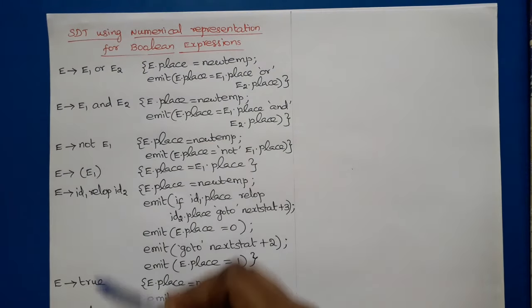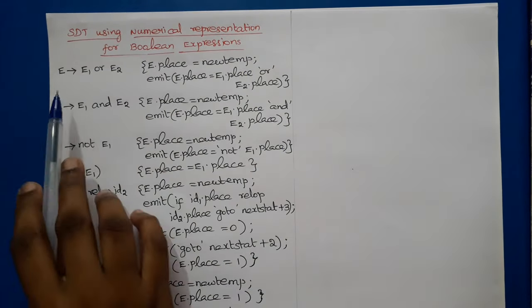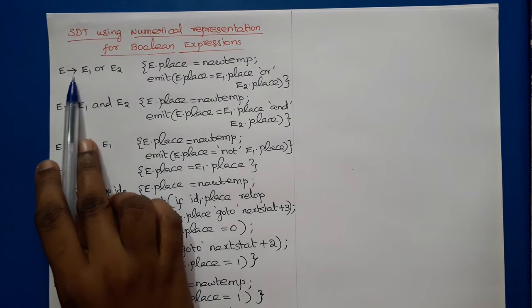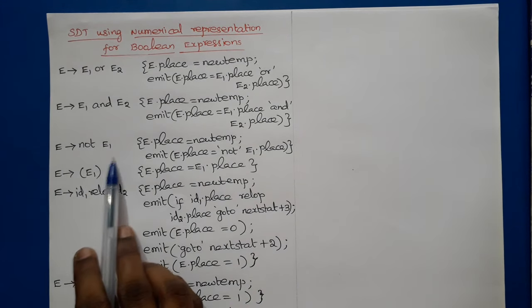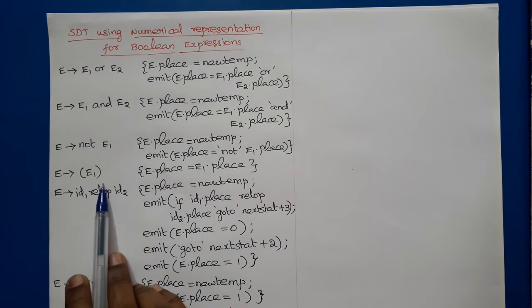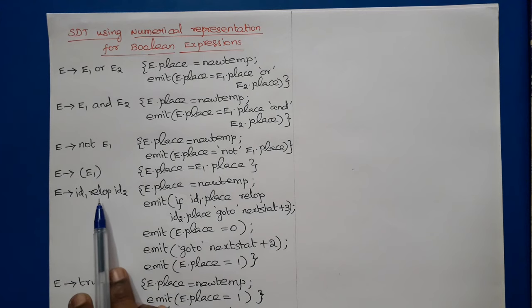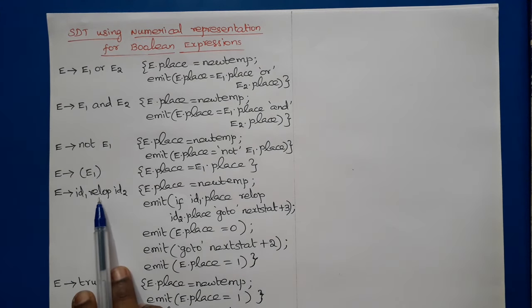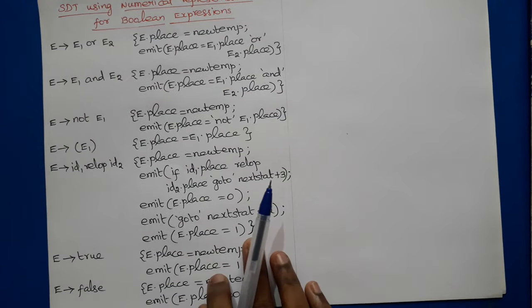This is the grammar for Boolean expressions. E → E OR E | E AND E | NOT E | (E). E may be a relational expression: ID1 relational-operator ID2. And E may simply be true or false.